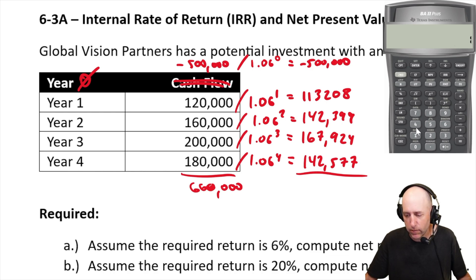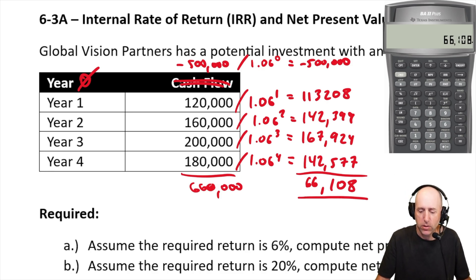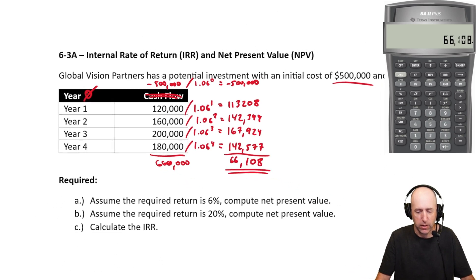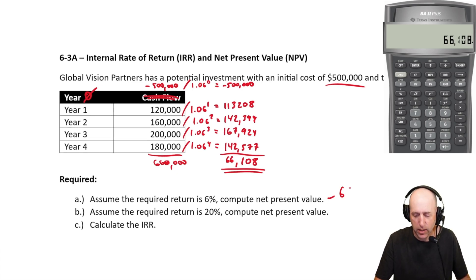plus 167,924, plus 142,577, equals positive 66,108, and so what we would say is, the net present value here is 66,108. This is a go. We should do the project. If the net present value is positive at all, it means this is a project worth doing.